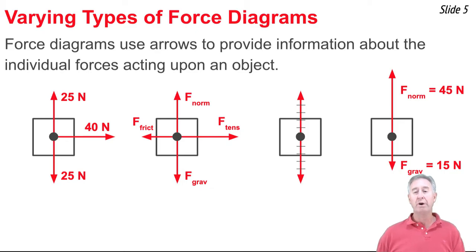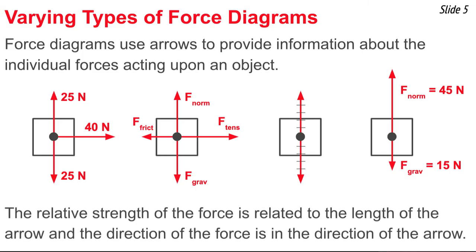Sometimes we can even put a combination of these things on our forces, like we can put symbols and numbers. So whatever we do to our force diagram, one thing's for certain, and that is that the length of each one of these arrows tells us something about the strength of the force, and the direction of the arrow tells us something about the direction of the force.